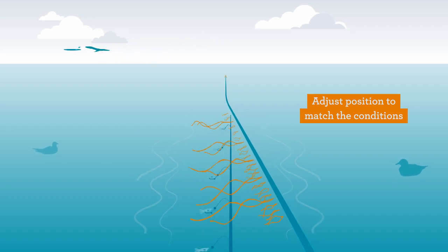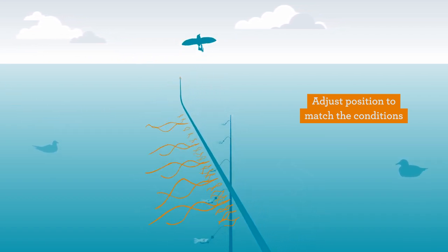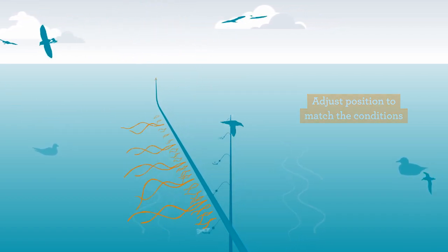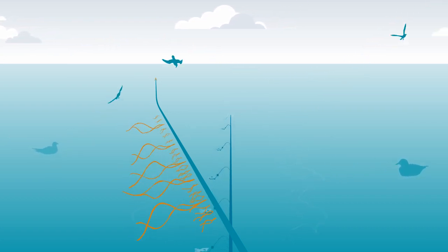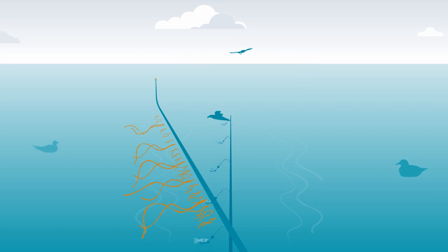Wind strength and direction in relation to vessel course can deflect the tory line away from its desired position over the hook line. If a line or cable is exposed, the tory line becomes ineffective.